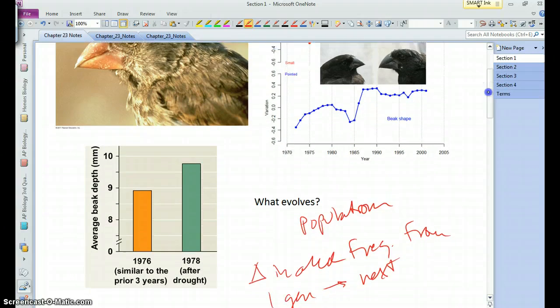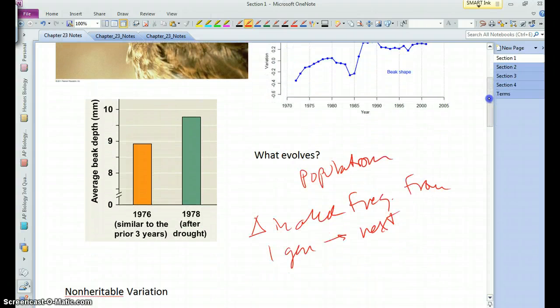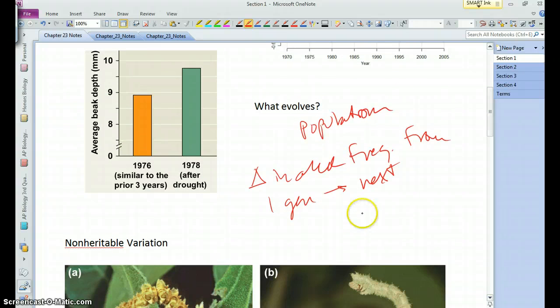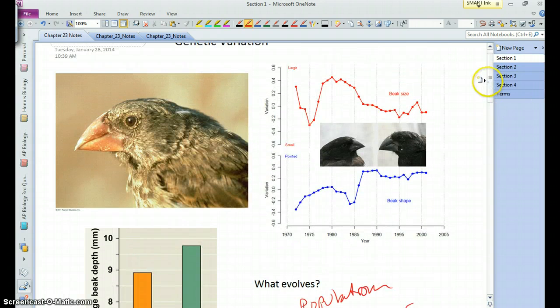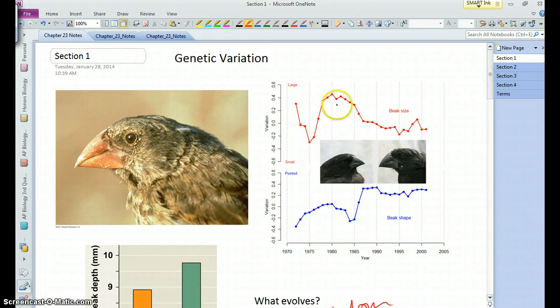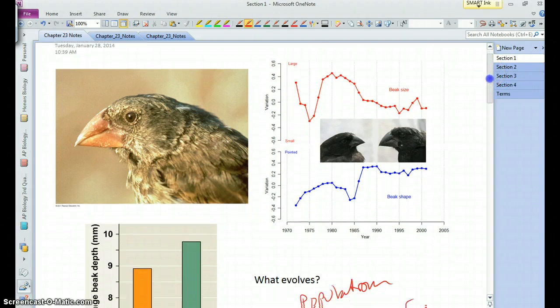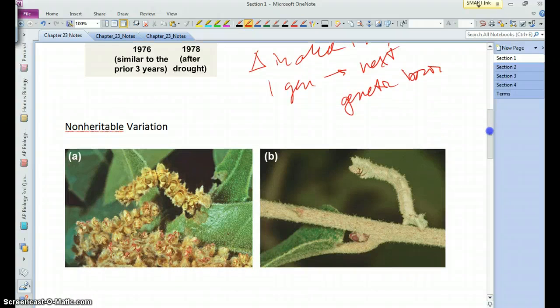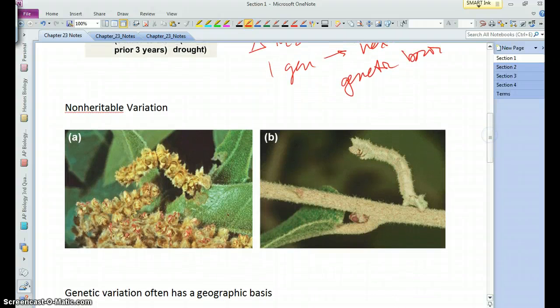And so, as we learned with studying Mendel and Darwin, traits that evolve have a genetic basis, and so something like beak size clearly has a genetic basis because it does evolve and change through time. However, you can have situations where a change does not necessarily result from a genetic change from one generation.